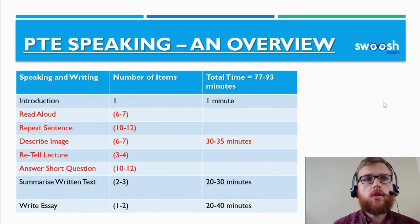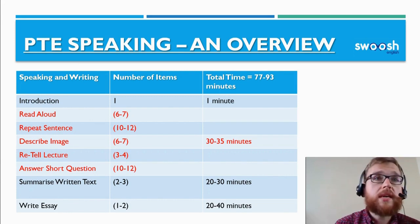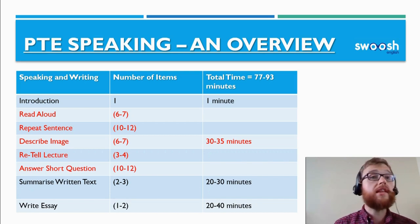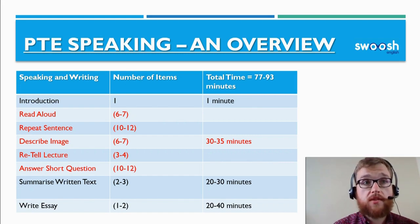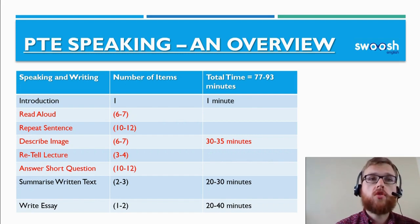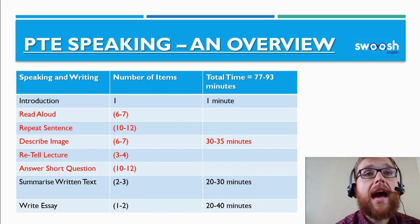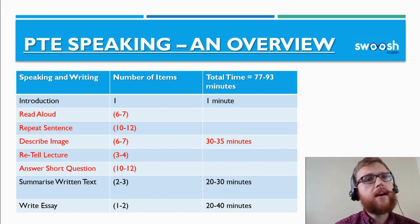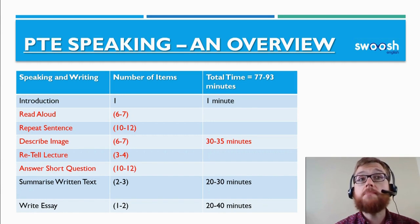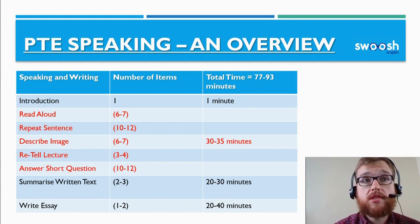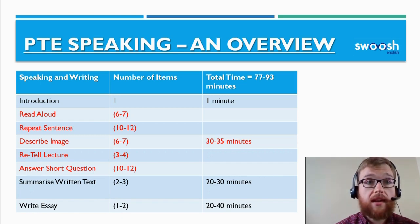Here is a table showing more information about the speaking and writing sections of the PTE examination. On the left-hand side we have the speaking and writing components: the introduction, read aloud, repeat sentence, describe image — which we are focusing on today — retell lecture, answer short question, and then the writing tasks: summarize written text and write essay. There will be six to seven read aloud tasks, 10 to 12 repeat sentences, six to seven describe images, three to four retell lectures, and 10 to 12 answer short questions.